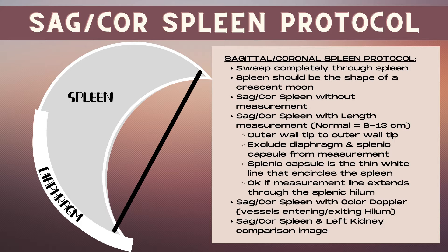Note that you can have mirror image artifact of the diaphragm because it's such a strong reflector. This means there will be two copies of the bright white line in the bottom portion of the spleen. Mirror image artifact is caused by sound waves bouncing off a strong reflector — in this case the diaphragm — producing an artifactual carbon copy structure above, below, or to the side of the strong reflector. This produces the appearance of two diaphragms, and the second structure is a copy only and is not real.